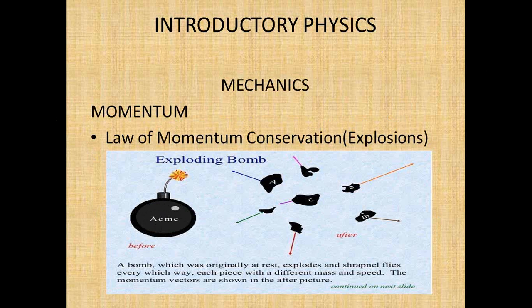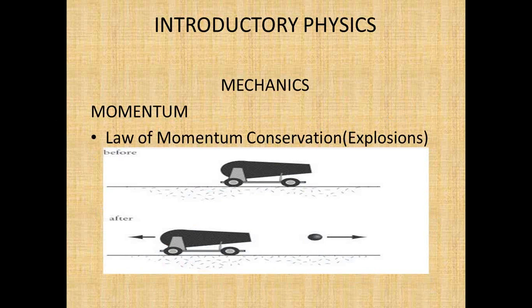A bomb which is originally at rest explodes and sharp nails fly in every which way, each piece with a different mass and speed. The momentum vectors are shown in the after picture. When you do the algebraic sum, if the bomb was at rest, you'll find that the total is zero because the total system momentum is conserved.